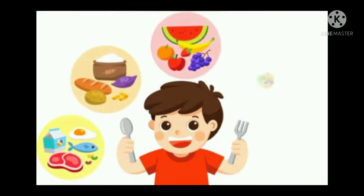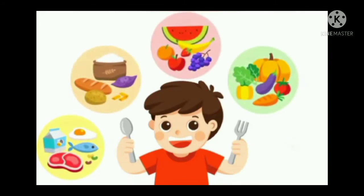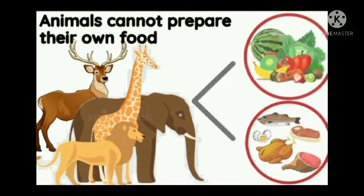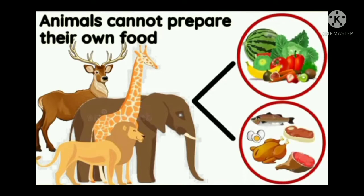All living things eat a variety of food to get energy to work and live. Animals cannot prepare their own food, so they depend upon plants and other animals for their food.